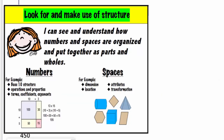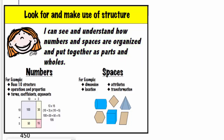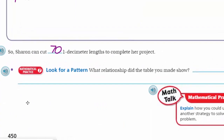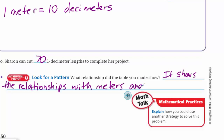Mathematical Practice seven says: look for and make use of structure. 'I can see and understand how numbers and spaces are organized and put together as parts and wholes.' The table we made shows that connection. It showed the relationship between meters and decimeters — one meter is equal to 10 decimeters.